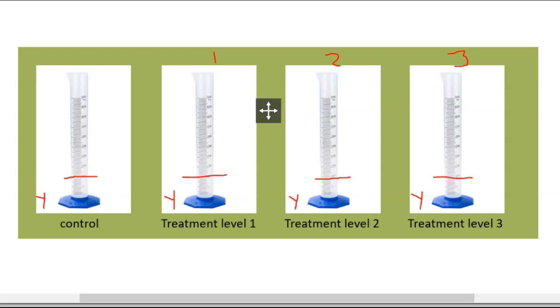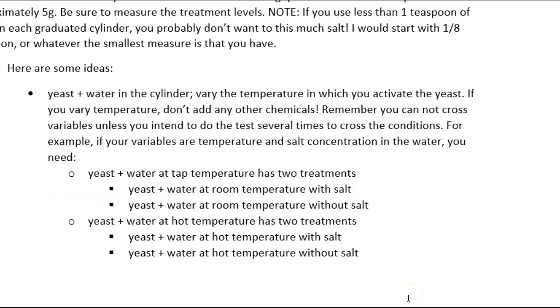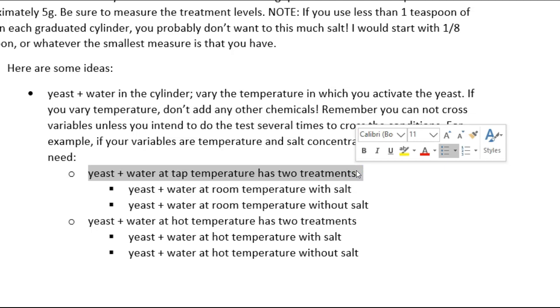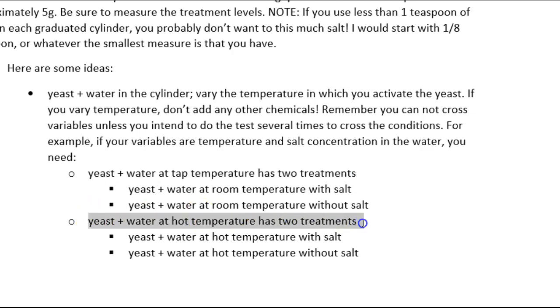That might be temperature, that might be food source which would be some kind of sugar or flour, that might be some inhibition like salt or detergent or alcohol which we all know have some process to break down cellular components. You might be interested in light; you might be interested in just about anything. The most important thing to keep in mind is that you want to be interested in just one thing.